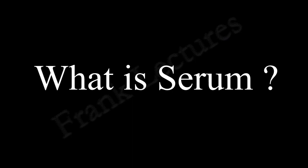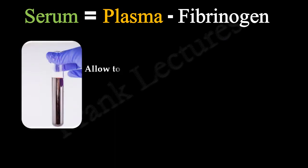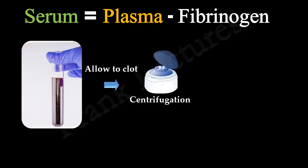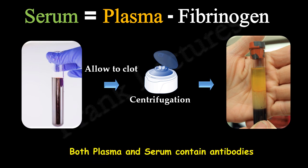Serum is plasma minus fibrinogen. If a whole blood sample is allowed to clot, the fluid that separates out is called serum. During the process of clot formation, fibrinogen is converted into insoluble threads of fibrin. Therefore, the fluid called serum does not contain fibrinogen. For serum preparation, whole blood is allowed to clot, then centrifugation is done. The clot sinks at the bottom, and the supernatant is the serum, which is carefully removed. Note that both serum and plasma will contain antibodies.